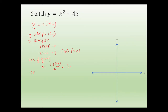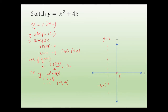Substitute x equals minus 2 into the equation: minus 2 squared plus 4 times minus 2 gives 4 minus 8, which is minus 4. So the turning point is (minus 2, minus 4). Sketching this, the axis of symmetry is x equals minus 2, turning point is (minus 2, minus 4), and one of the x-intercepts is (0, 0). Because of symmetry, that distance should be approximately the same on both sides.